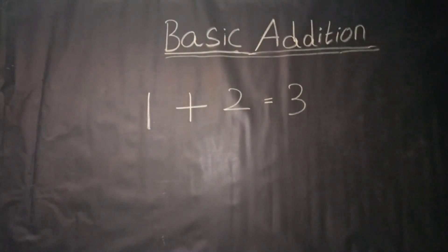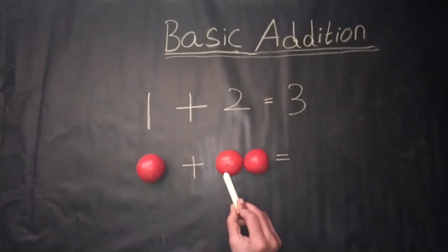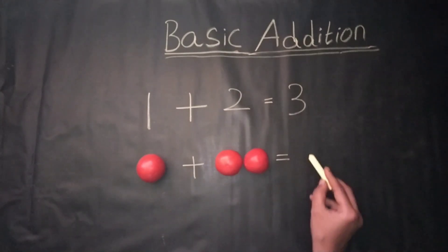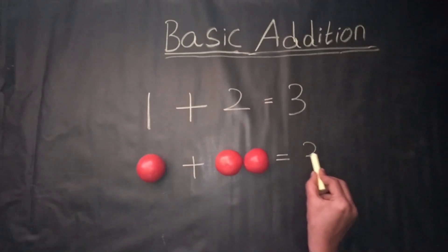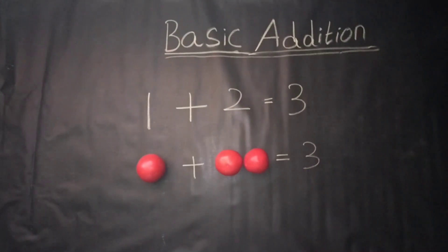Counting by objects, 1 plus 2 is equal to — count together: 1, 2, 3. We get the answer: 3.